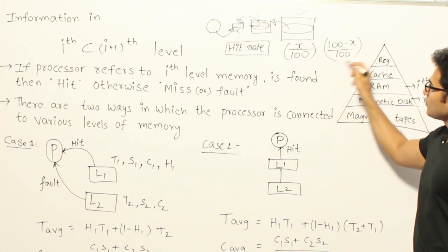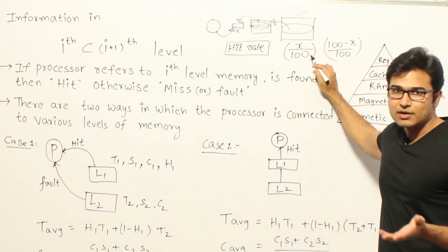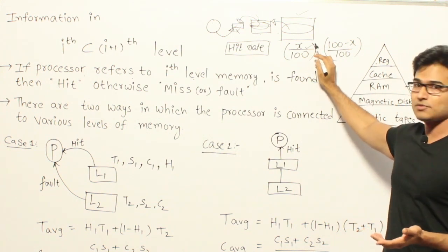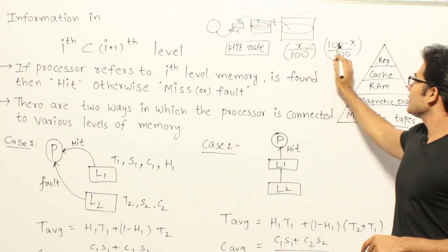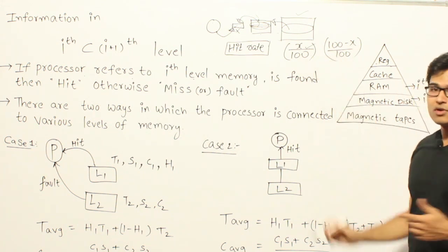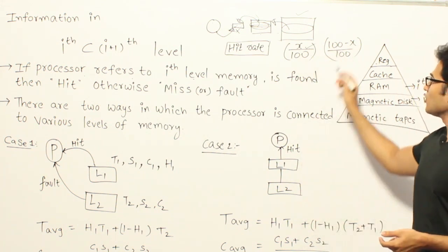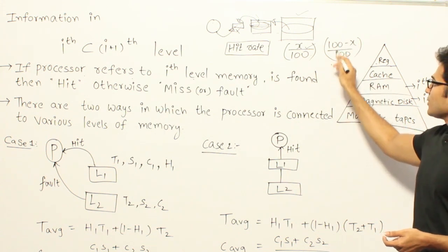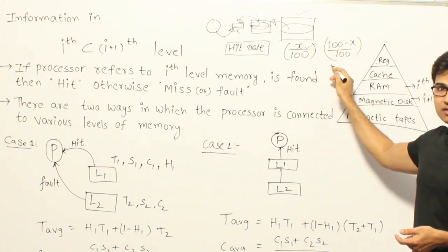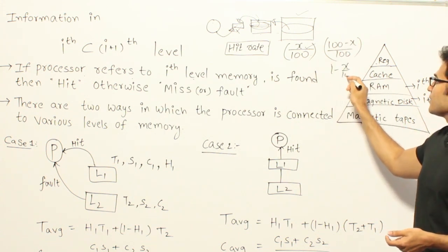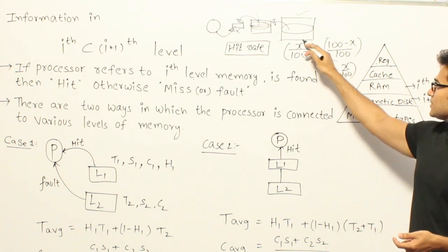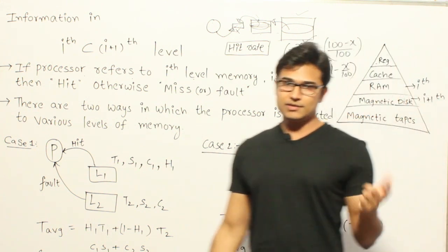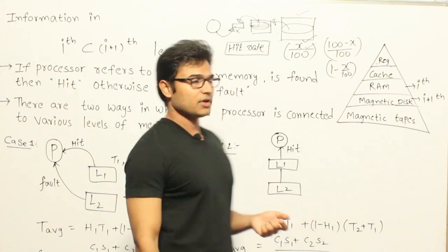Out of 100 times, if you are asking for a word and are able to find it x times, then 100 minus x times you are not able to find it. Therefore, the miss rate will be equal to 1 minus x by 100. So if H1 is the hit rate, then the miss rate is nothing but 1 minus H1.